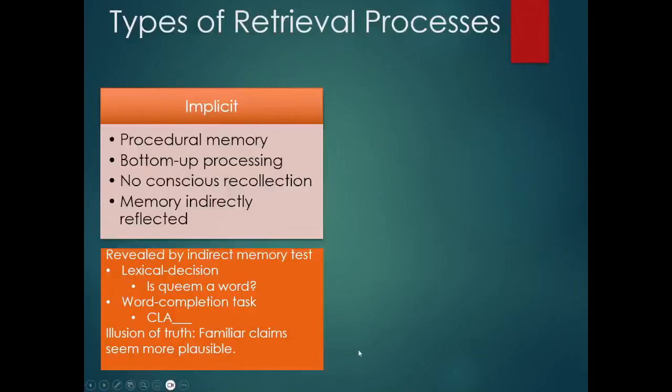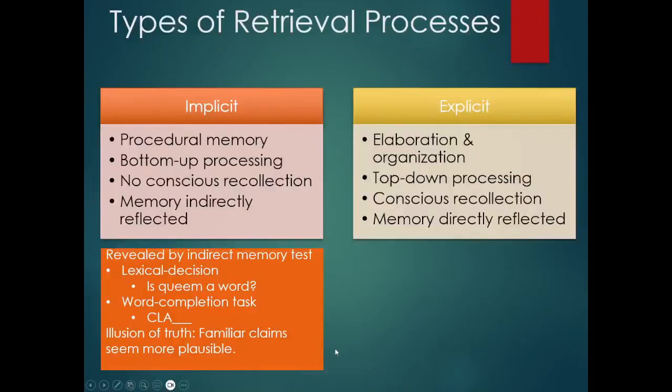Now explicit memory would be the kind of memory that benefits from like elaboration or from organizational strategies. These are things that you do on purpose. It's a top-down process where you take what you already know and process the information through that lens. You have a sensation of conscious recollection whenever you're talking about explicit memories because these are things that you know you know.